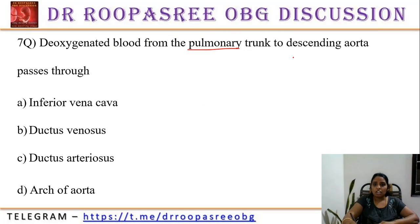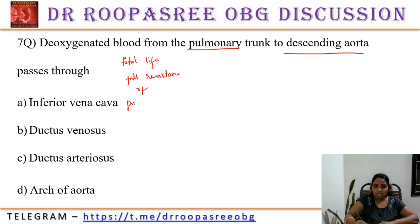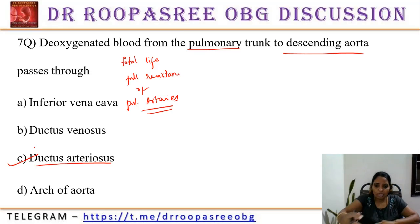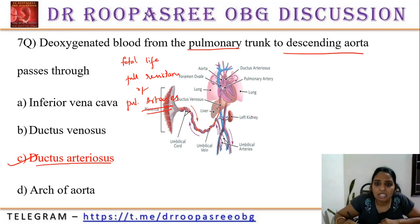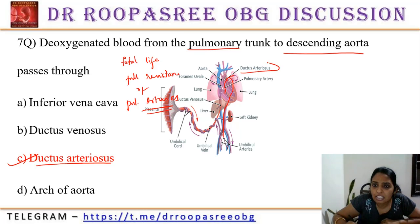Deoxygenated blood from the pulmonary trunk to the descending aorta passes through the ductus arteriosus. In fetal life, there is full resistance of the pulmonary arteries. Blood passes from the right atrium to the right ventricle and pulmonary trunk, but due to high resistance, it passes through the ductus arteriosus to the descending aorta and then to the umbilical arteries.